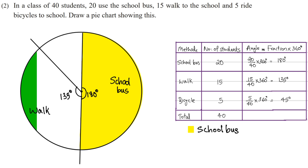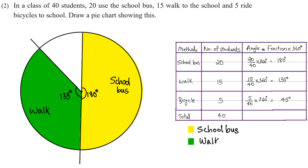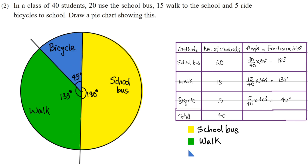This section will be shown in a color — I am going to use green. We will now measure the angle for the bicycle part. There are three parts; two parts are done, now we do the bicycle at 45 degrees. We use blue for the bicycle and complete the pie chart.